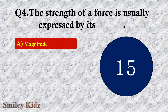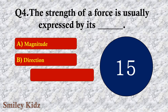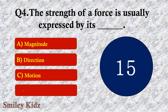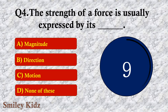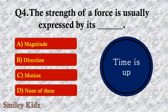Question number four: The strength of a force is usually expressed by its dash. The options are A. Magnitude, B. Direction, C. Motion, or D. None of these. The right answer is option A — Magnitude. The strength of a force is usually expressed by its magnitude.